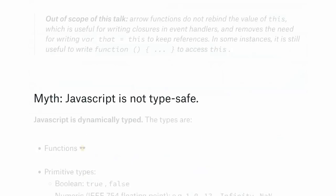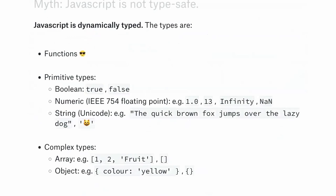Another common misconception is that JavaScript is not type-safe. The correct saying is that JavaScript is dynamically typed — types are determined at runtime, and variables don't know what type they are until you run them. That is very different from not being type-safe. JavaScript has only about five or six types: functions, booleans, numbers — which are floating point; in JavaScript there are no integers, it's all floating point — strings, which by default are Unicode UTF-8 and accept both double and single quotes, and you can even include emojis.